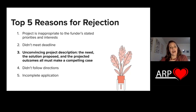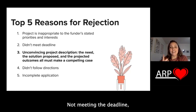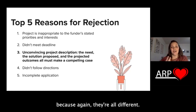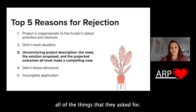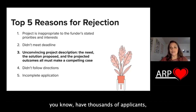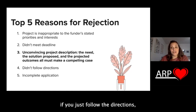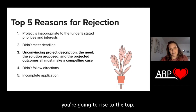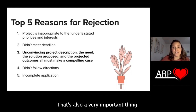Numbers two, four, and five — the most common reasons applications are thrown out — have to do with clerical issues: not meeting the deadline, not following the instructions of the grant, or not submitting everything they asked for. Please be sure to read all the instructions. If you follow directions and make sure your application is complete, you're going to be the cream of the crop. Some of these grants have thousands of applicants, and you might feel intimidated — but if you just follow the directions, you're going to rise to the top and be one of the applications they don't throw out immediately.